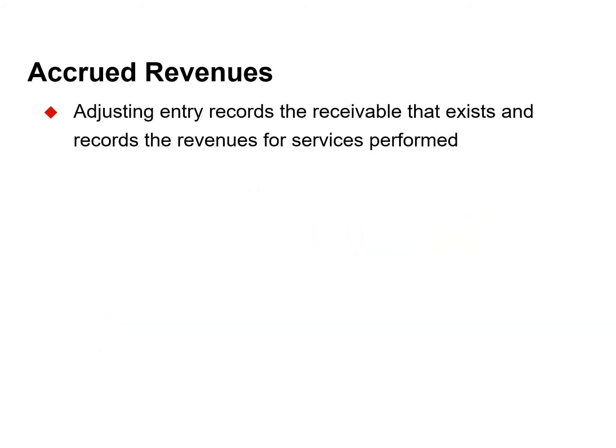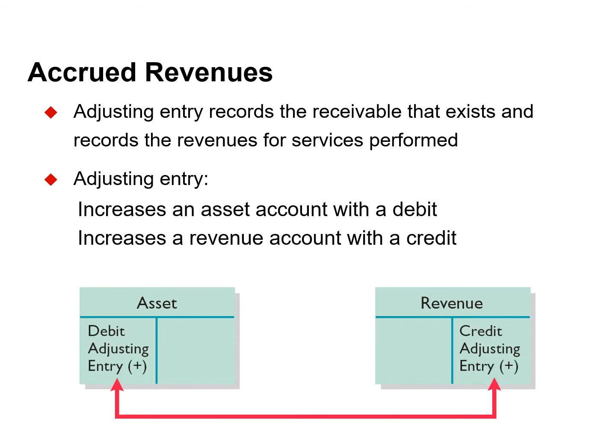An adjusting entry records the receivable that exists at the balance sheet date and the revenue for the services performed during the period. An adjusting entry for accrued revenues results in an increase, or a debit, to an asset account and an increase, or a credit, to a revenue account.